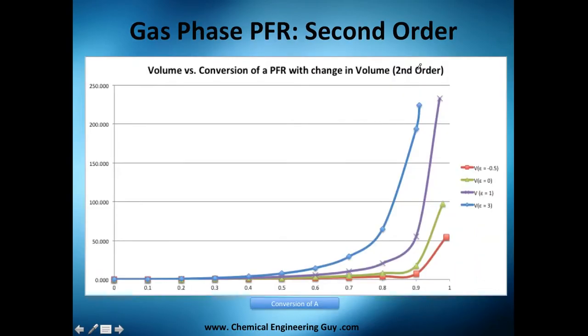So that's why, as epsilon goes, or increases, this graph goes faster and faster to the left, until you will need almost infinite volume to satisfy that conversion.